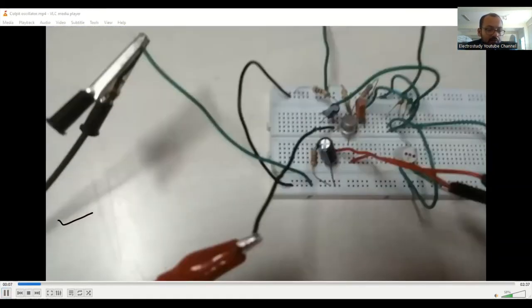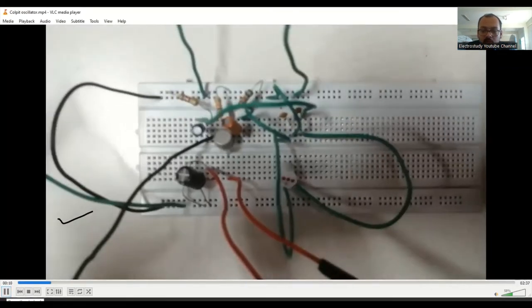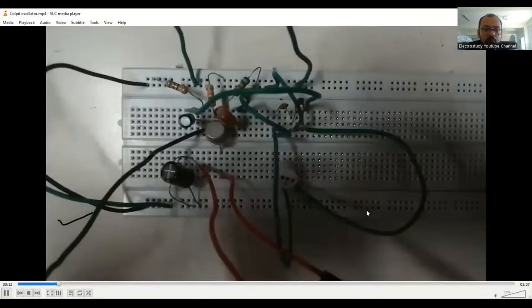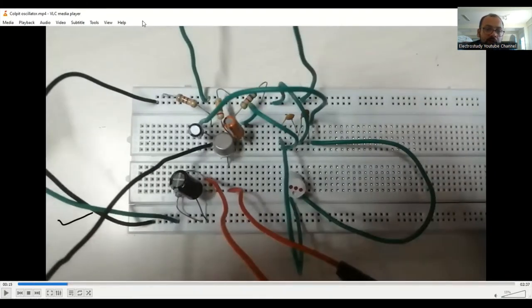As you can see, we have done the entire components in the particular breadboard itself. Please identify the components. We require the transistor at the beginning. You have to identify the collector, emitter and base. That we already explained how to check the components or how to identify the terminals of the transistor.